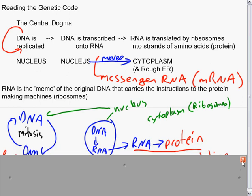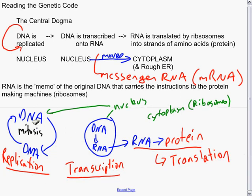So as an overview, DNA duplicates itself through a process of mitosis. This is known as replication. DNA is copied as an RNA copy. This is known as transcription.